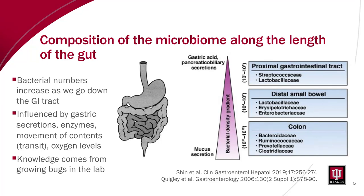The microbiome is not the same in all parts of the GI tract — it changes as we go from higher to lower down in the gut. Generally speaking, there are more bacteria lower down than higher up. Factors like gastric acid, fluid secretions, different enzymes, and transit speed all affect which types of microorganisms can thrive. Transit is generally faster in the small intestine than in the colon, which also affects how the community develops. This slide outlines some major groups found in certain sections of the intestine.